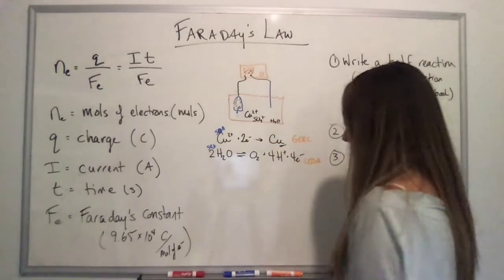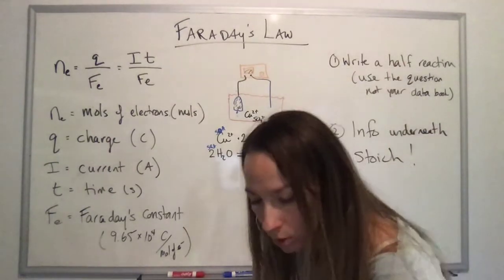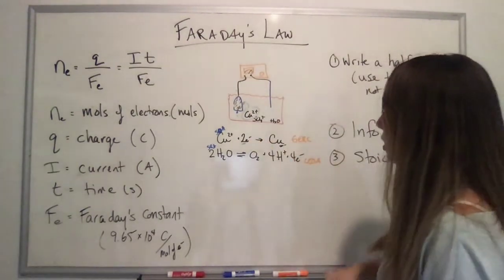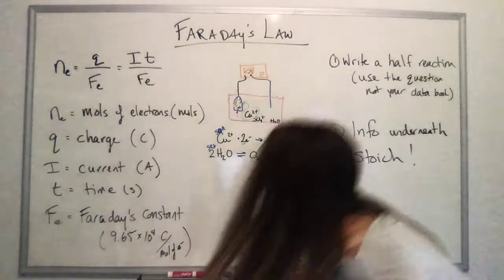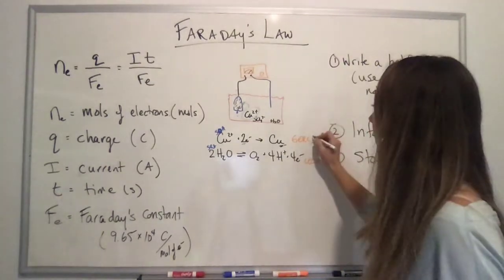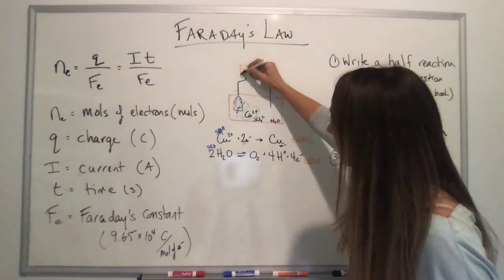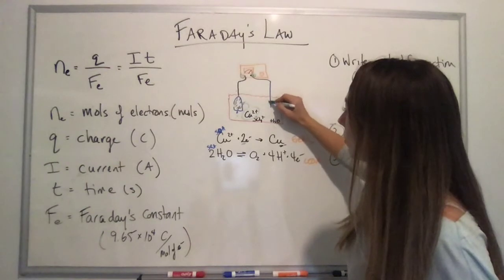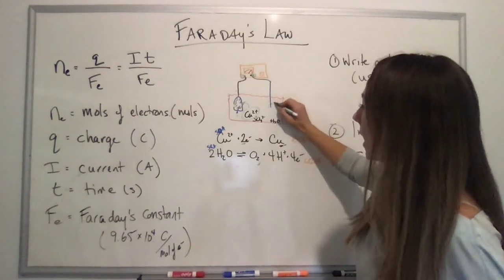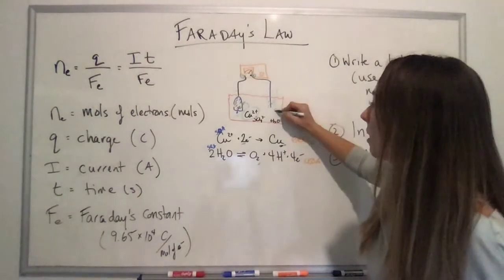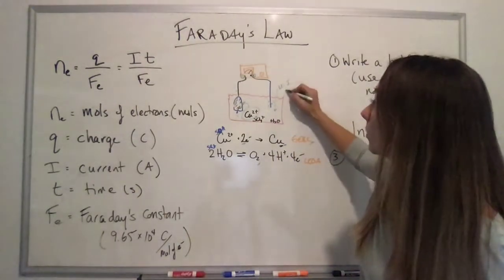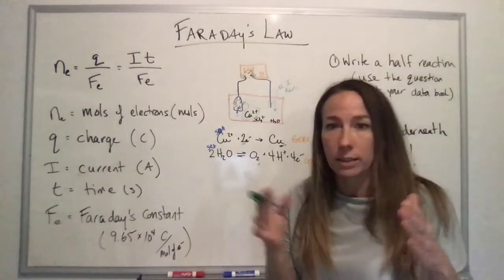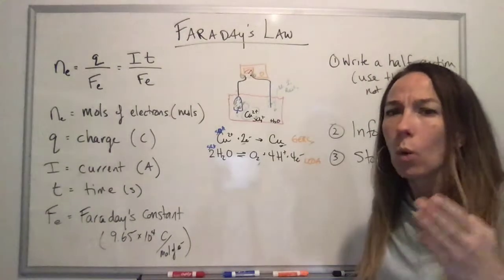I want these copper two pluses to go to my cathode and pick up two electrons and become copper. In electrolytic cells the cathodes are negatively charged so I better hook this up to the negative end of the battery and have that be the positive end. Turn my battery on, I'll have bubbles forming here, oxygen bubbles, and my pH is going to go down. If I had some universal indicator it would be turning red around that anode.